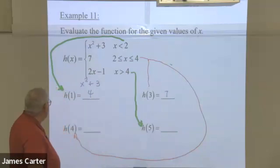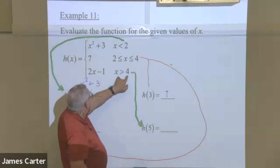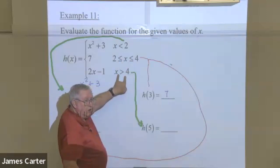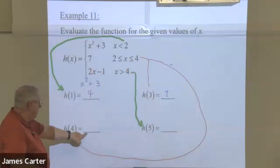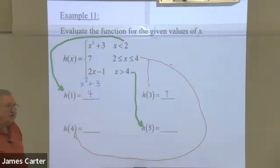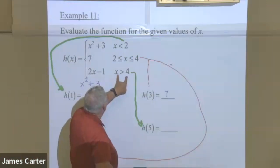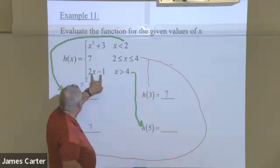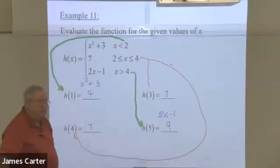What if x is four? Four will only work in the second equation — the horizontal line — because the third equation does not include four, and neither does the first. So once again we have that horizontal line, and the only answer for y is seven. Finally, what if x is five? This is the only equation that fits the restrictions for five: two times five is ten, minus one is nine.